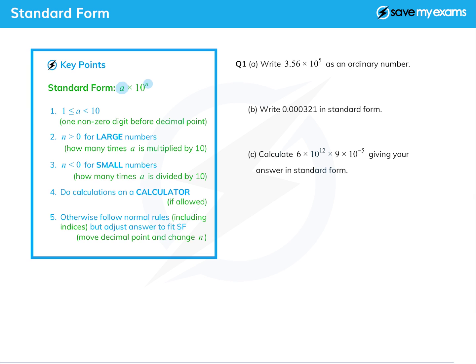The rules are very simple. The number at the front, the 'a' as I've called it, must be between 1 and 10. It's not allowed to be 10 actually, which is why I've put less than 10 there, but anything up to 9.999. In other words, there is one non-zero digit before the decimal point in that number.